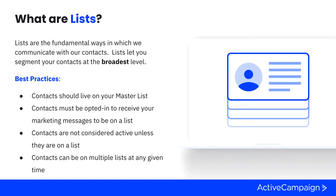Contacts must be opted in to receive your marketing messages to be on a list — all contacts on your list must have actively opted in. When you purchased ActiveCampaign, you chose a plan and a contact limit. Your active contacts are those who have chosen to opt in, and active contacts are the ones that count toward your contact limit. You are not considered an active contact unless you are on a list, so it's really important to include all your opted-in contacts on lists.